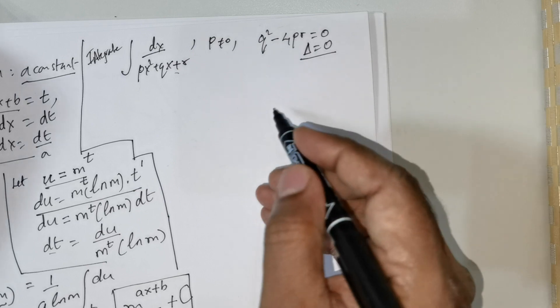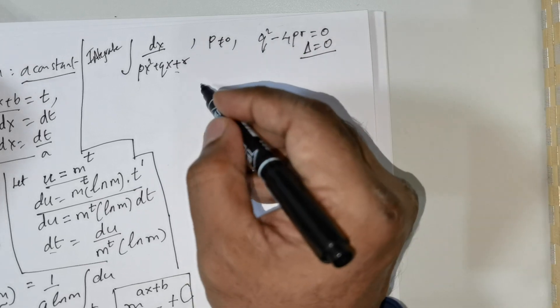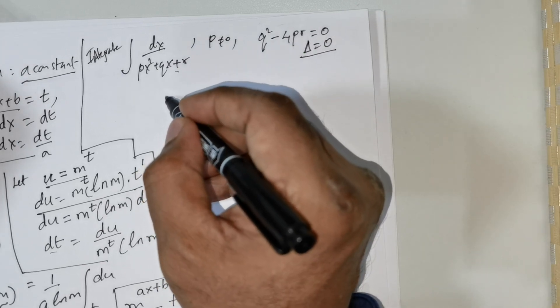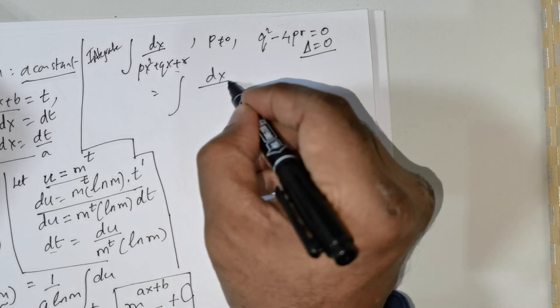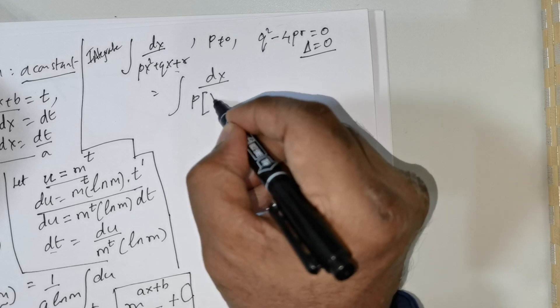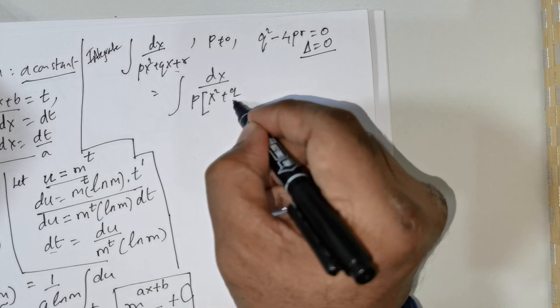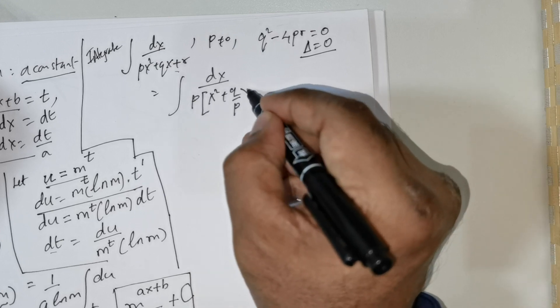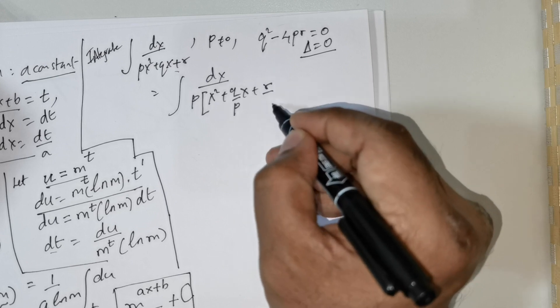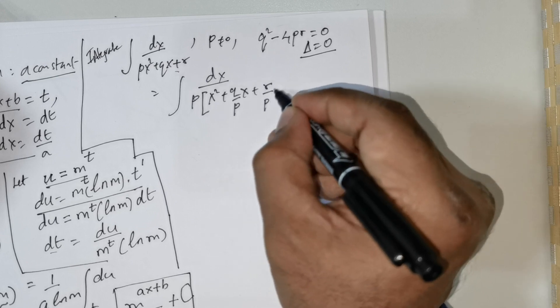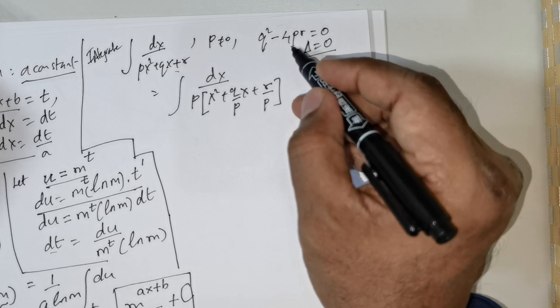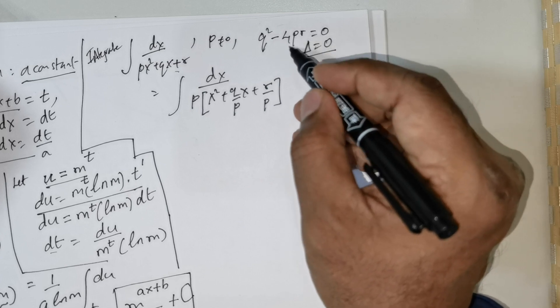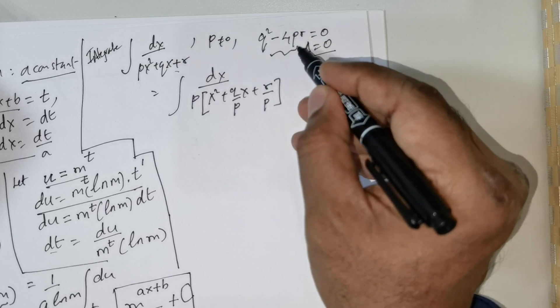Now what I wish to do is, foremost I would like to take p out. So this is dx over p taken out, which gives me x squared plus q over p times x plus r over p.